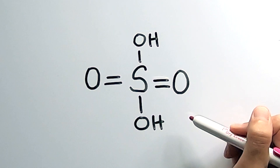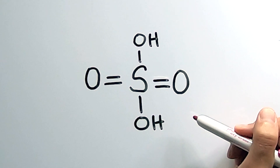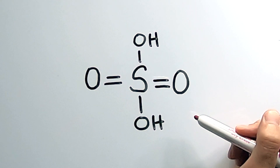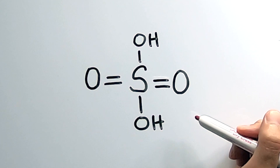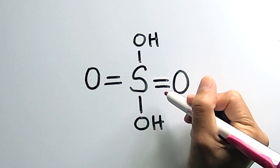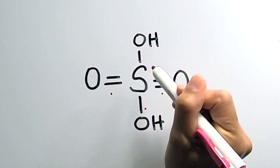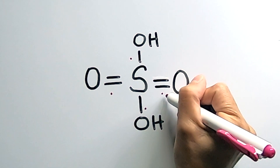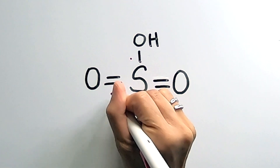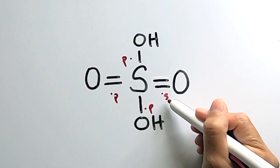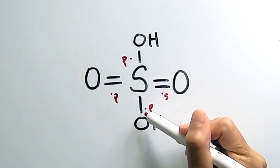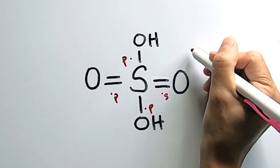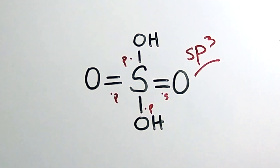Let's use sulfuric acid for our first example. The first thing you want to determine is how many electron domains there are — basically, how many bond regions or lone pair regions there are. In sulfuric acid, there are four bond regions. So you go S, P, P, P — remembering that there's only one orbital in S and three orbitals in P. So this is sp³ hybridized.